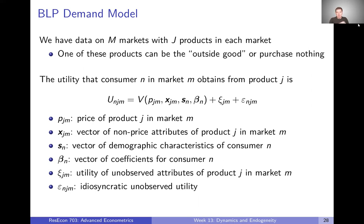Our model: we have data on M markets with J products in each market. Often we think of one of the products as being the outside good, just meaning purchasing nothing — a vector of zeros for all the attributes. The utility that consumer N in market M obtains from product J is going to have a representative utility term. We'll leave this general — it could be the same kind of linear representative utility we've discussed — but this representative utility is going to depend on the price of the product, a vector of non-price attributes, possibly some demographics about individual consumers, and a vector of coefficients for the specific consumer. Importantly, a product has a fixed set of attributes, and a fixed price in the store.